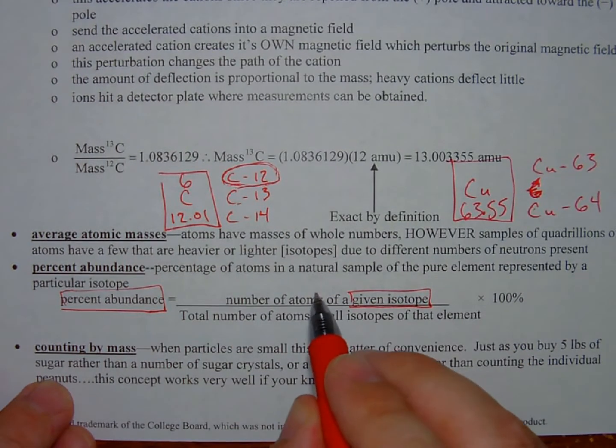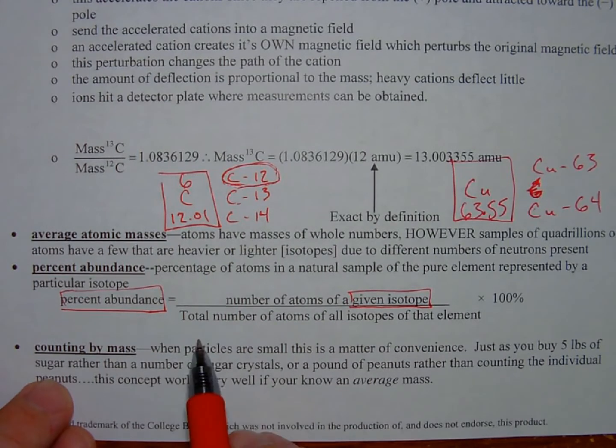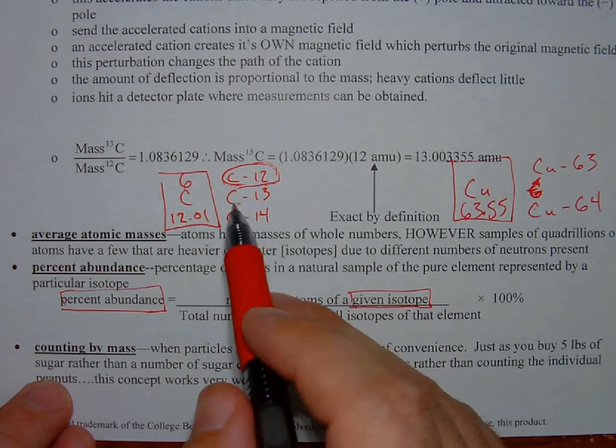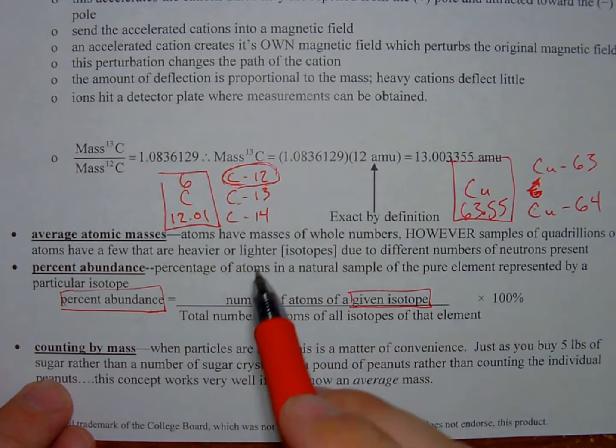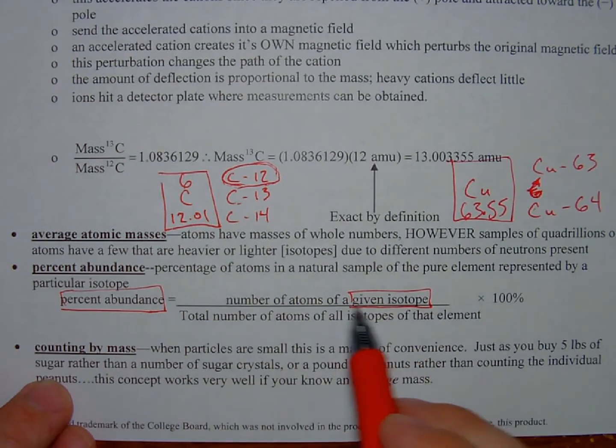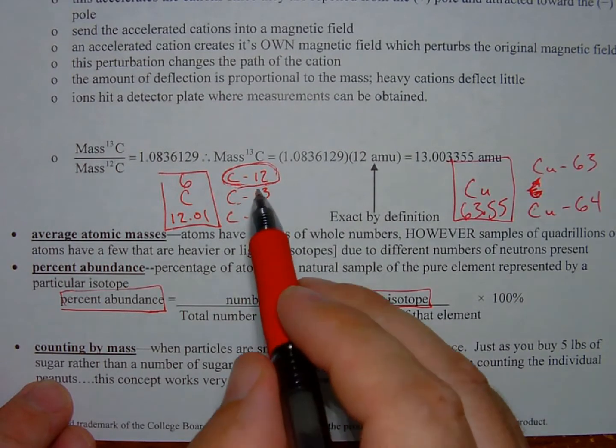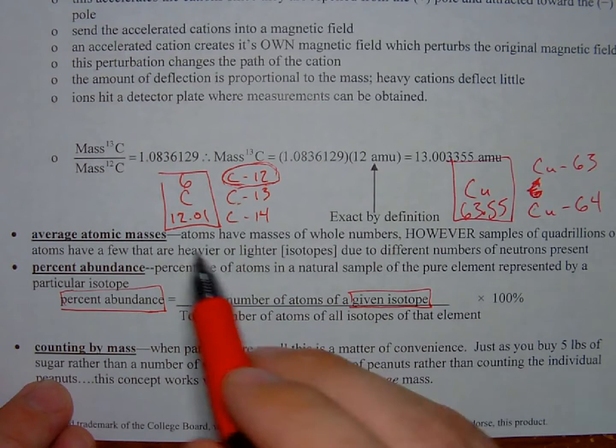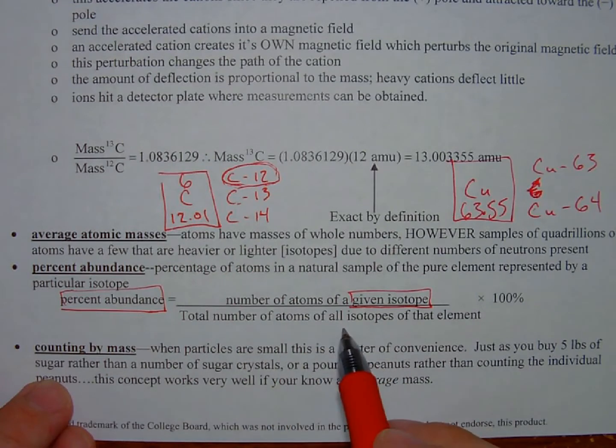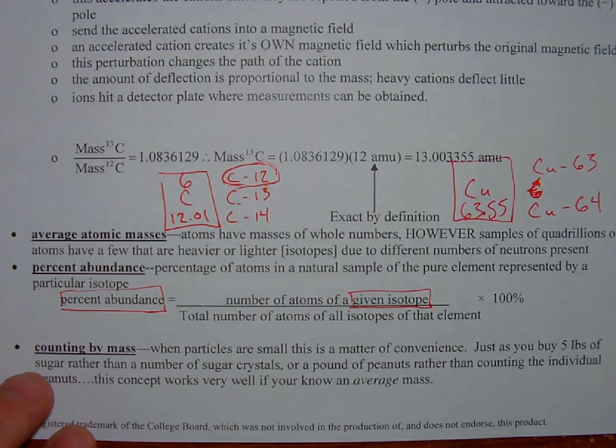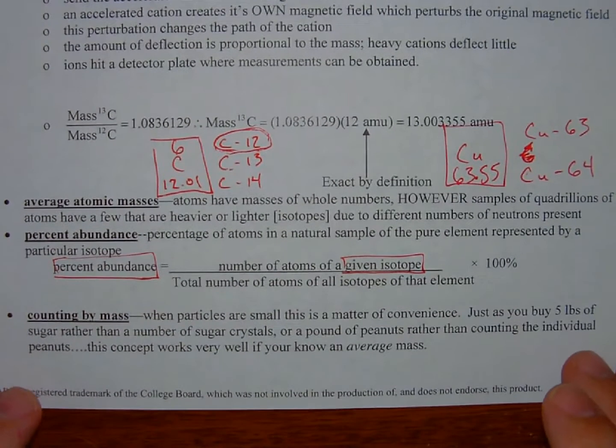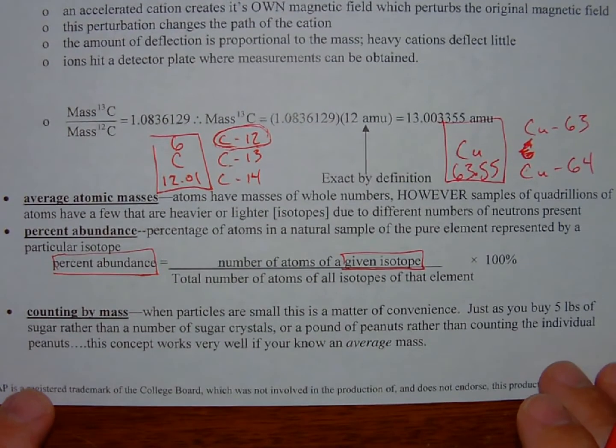the number of atoms of that particular isotope would go on top. On the bottom, the denominator would be the total number of atoms of all isotopes of that element. So if we were doing percent abundance of carbon-13, we would count all the carbon-13 atoms, put them on top in the numerator, and then count all the atoms of carbon-12, carbon-13, and carbon-14, add them all together, put them on the denominator. Divide those out, multiply by 100%, that is your percent abundance. It's basic elementary statistics.